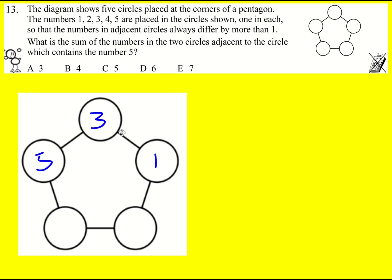But basically three is going to have to be next to one and five, and then that only leads us to two and four, which basically means this has to be two and this has to be four.